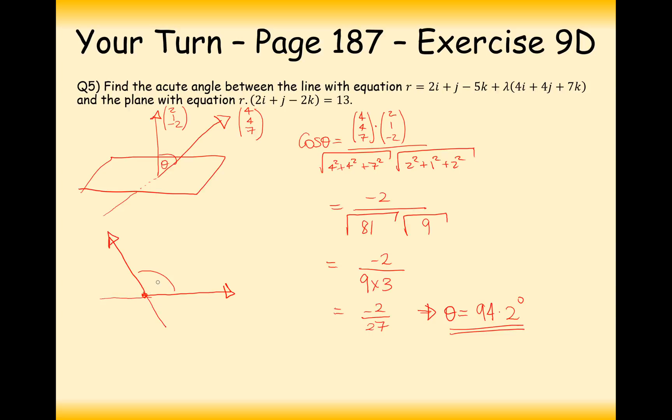We've worked out this 94.2 angle here. What we really would like is this angle around here, so that's going to be 85.8. So, what we're going to do now is we're going to use that angle subtract 90, so it's going to be 90 minus 85.8, which will give us 4.2. So, quite a small angle between that line and that plane there.